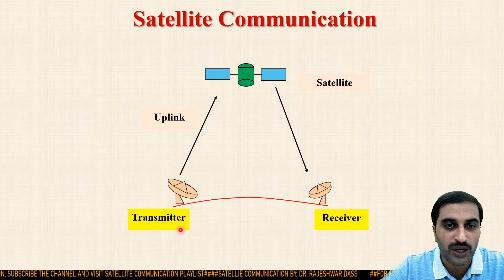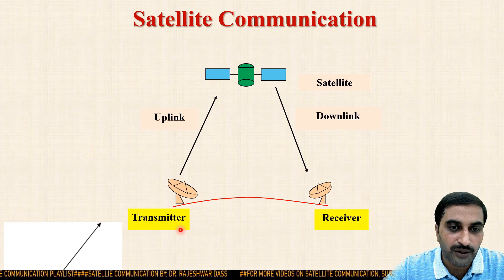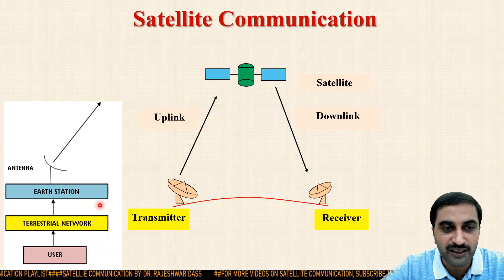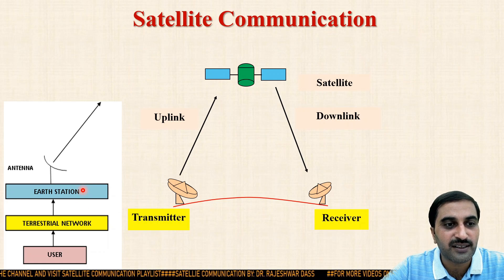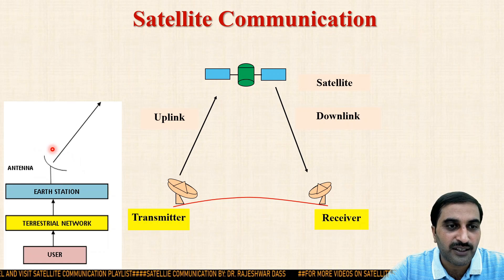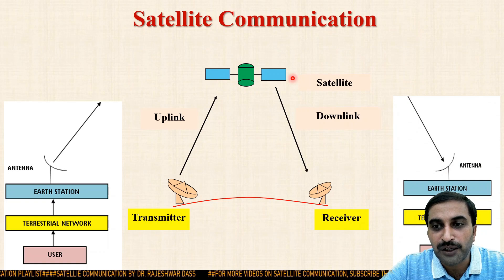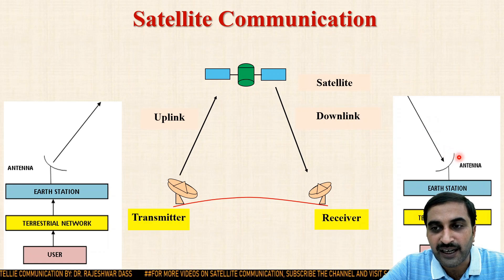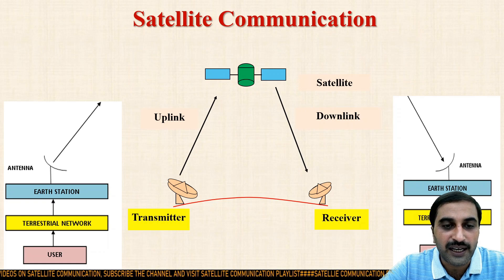The transmitting earth station is utilized to transmit the user's information through the uplink to the satellite. The user is connected to the earth station via terrestrial networks. The user transmits information to the earth station through the terrestrial networks, and then the earth station transmits this information via the transmitting earth station antenna to the satellite through the uplink. Similarly, the satellite transmits the information towards the receiving earth station using the downlink. The antenna converts the electromagnetic signal into an electrical signal, which is then given to the receiving earth station, which then transmits the information to the user through the terrestrial networks.